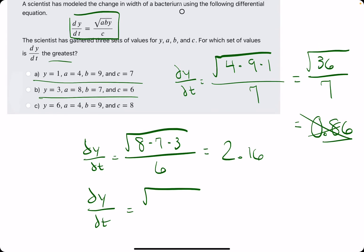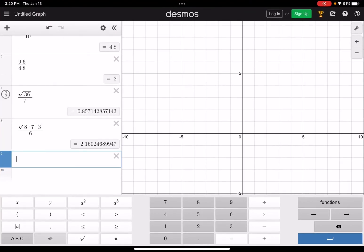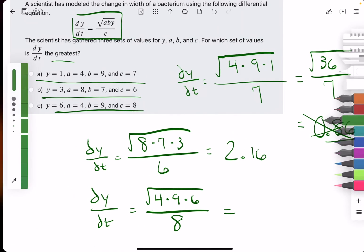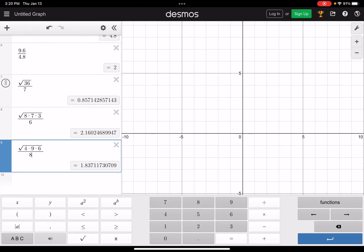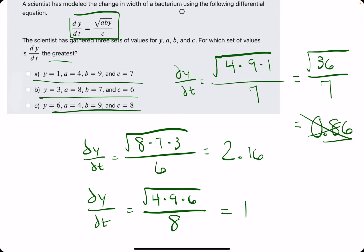We have a times b times y. From option C, we have 4 times 9 times 6, all divided by c, which is 8. Let's plug this into Desmos: square root of 4 times 9 times 6, all divided by 8. That gives us 1.837, or 1.84 if we round.